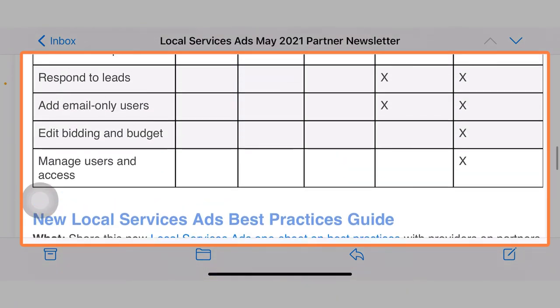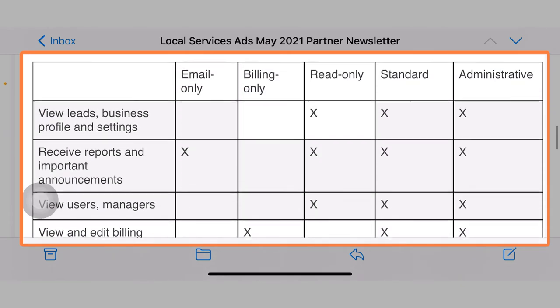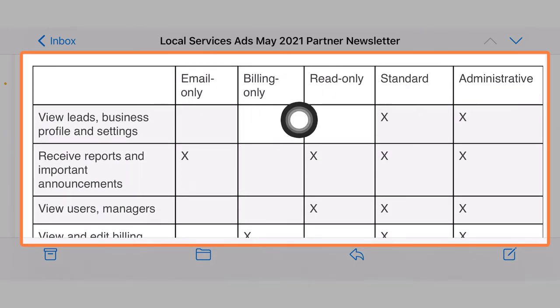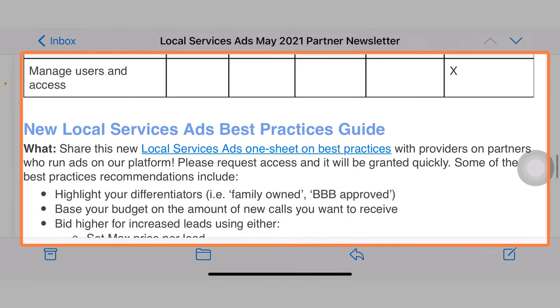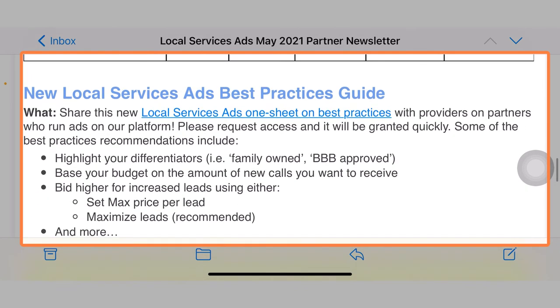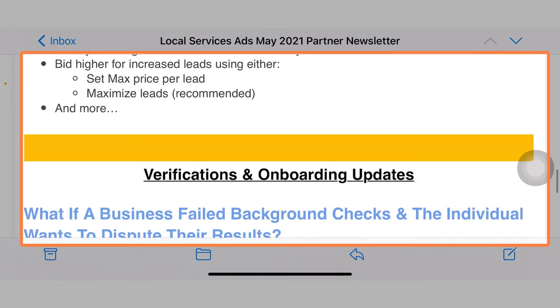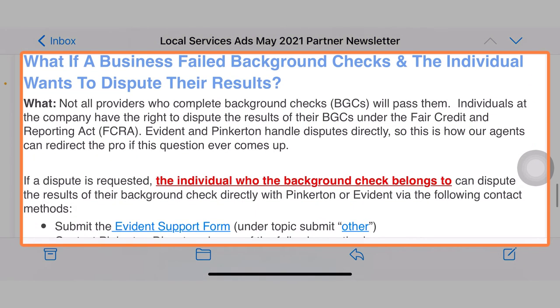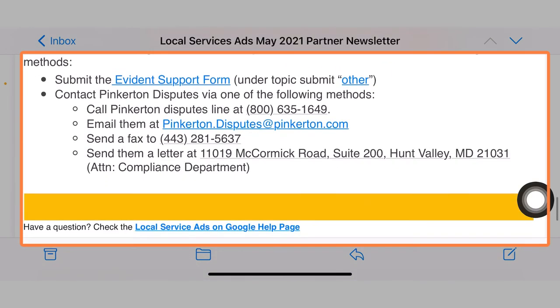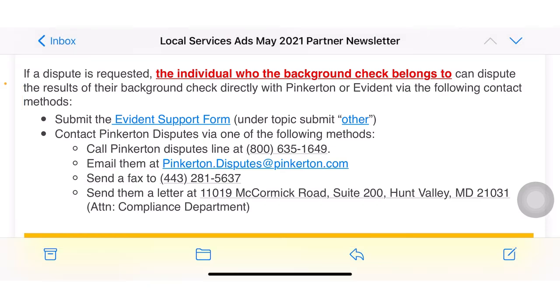This is kind of a quick update — just some small changes, not a lot of really big changes this month. Giving people different permissions is nice, and now there are five instead of three. This best practices guide is definitely kind of nice — go and check out that other video; we'll create a link to it in the description. For verifications, the individual needs to go back, but there are procedures to follow in order to do that. Let me know if you have any questions. Give us a thumbs up and please like and subscribe to our channel to get more updates like this on local service ads and all the other things that have to do with getting your phone to ring as a business.